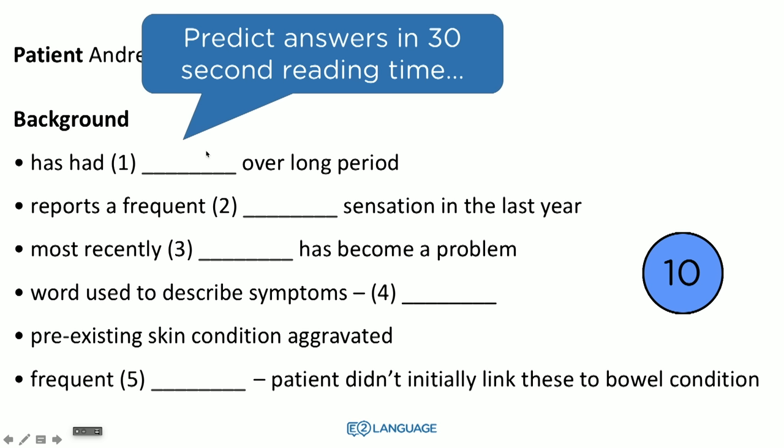Let's look at number one: 'has had something over a long period' — what might that be? What type of word? Number two: 'reports a frequent something sensation' — we're probably going to be looking for some sort of gerund adjective with an -ing ending. You've got to move quite quickly, because remember you have 30 seconds to look at 12 gaps. I want you to predict what type of word might fit in each gap.